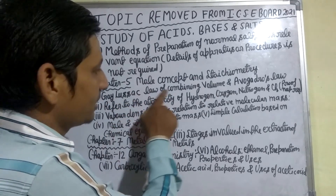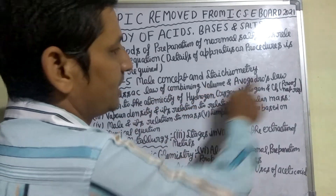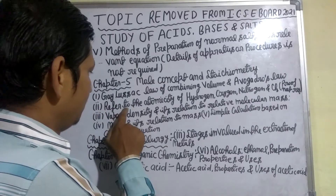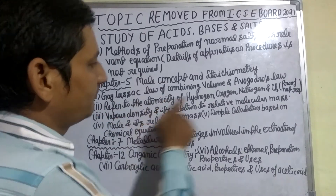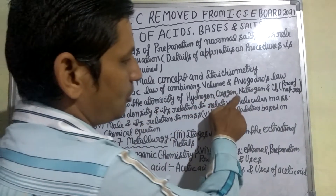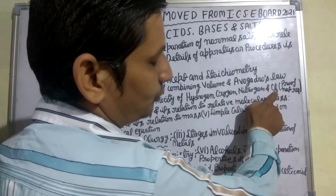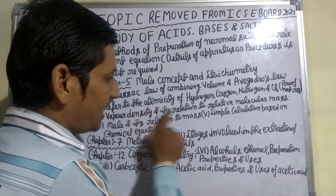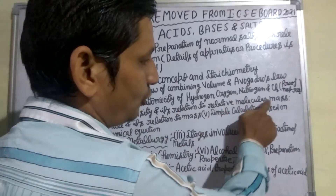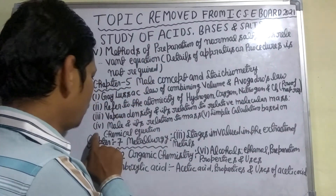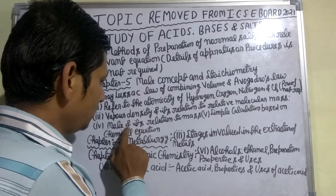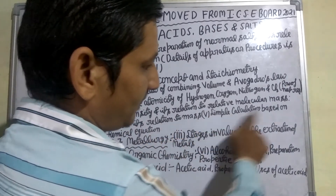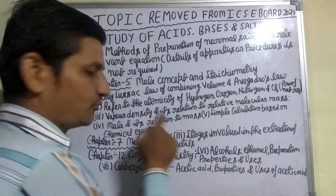The 5 removed topics are: Number 1 — Gay-Lussac's law of combining volumes and Avogadro's law. Number 2 — Refer to the atomicity of hydrogen, oxygen, nitrogen and chlorine; proof not required. Number 3 — Vapor density and its relation to relative molecular mass. Number 4 — Mole and its relation to mass. Number 5 — Simple calculations based on chemical equations.